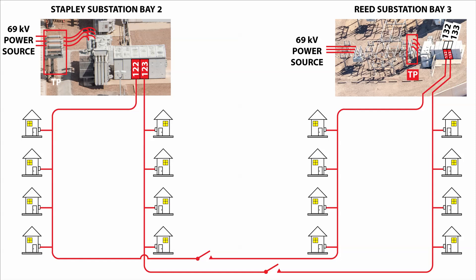Two transformer bays are shown at Stapley substation and at Reed substation, which are a few miles apart. Four single-phase 7.2 kV circuits will be used to illustrate how SRP restores power after a fault occurs. A fault is defined as any problem which causes electricity to flash phase to phase or phase to ground. All electrical circuits are insulated to guide electrical energy to the desired load, and when this insulation breaks down, we call the problem a fault and electricity flashes like lightning between two phases or from a phase to ground.